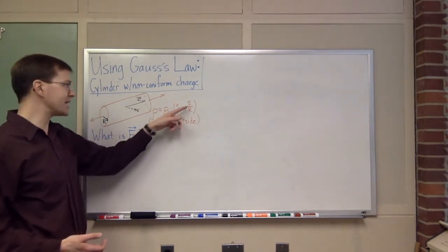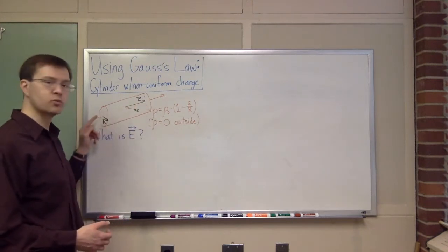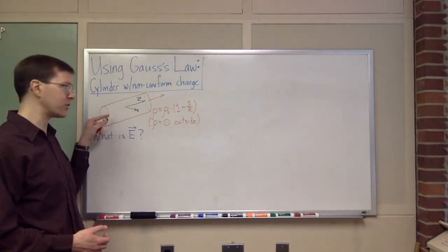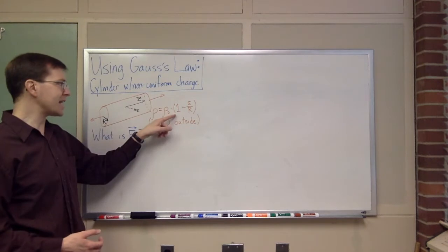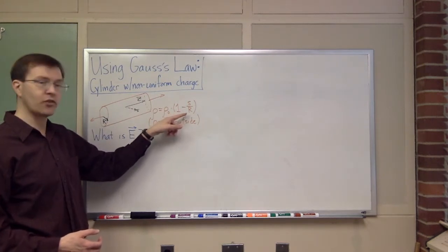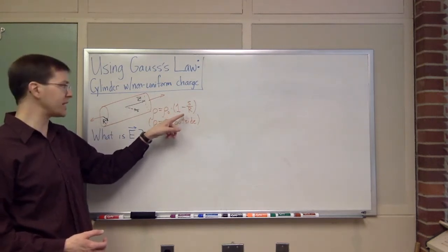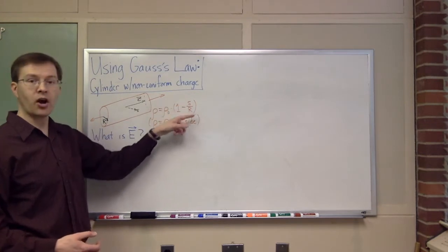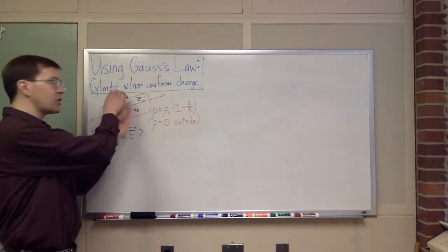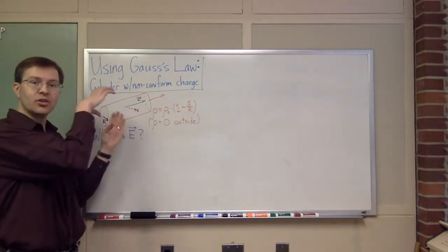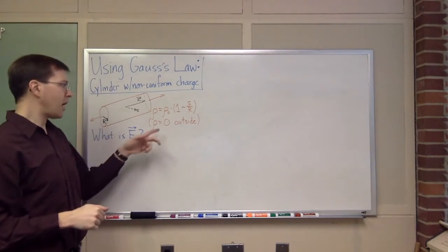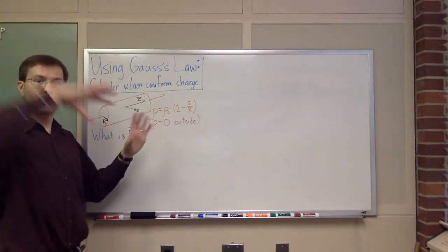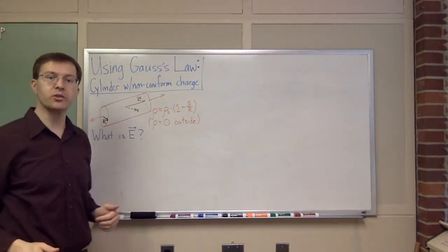When s equals zero, the charge density is rho-naught — rho-naught is the charge density along the axis of the cylinder. As s gets bigger, (1 minus s over r) gets smaller until s equals r, where this is (1 minus r over r), which is zero. So there's zero charge density at the surface of the cylinder. Outside the cylinder, rho equals zero — there's no charge anywhere else in the universe.